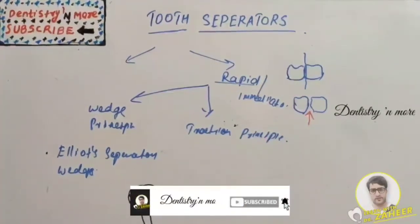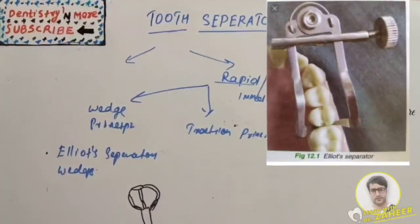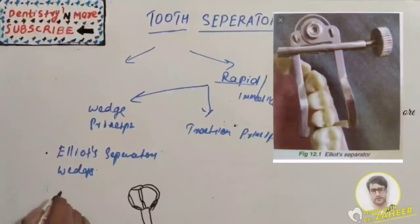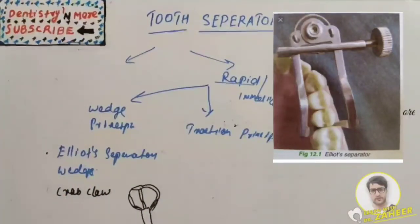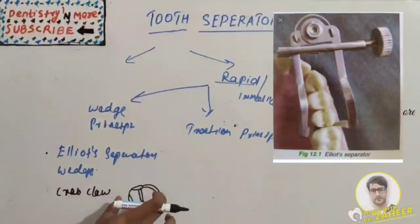The Elliott separator, which is also known as crab claw separator because of its design, is a mechanical device consisting of a bow, two holding jaws, and a tightening screw.